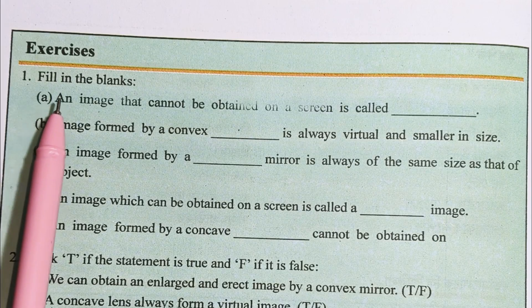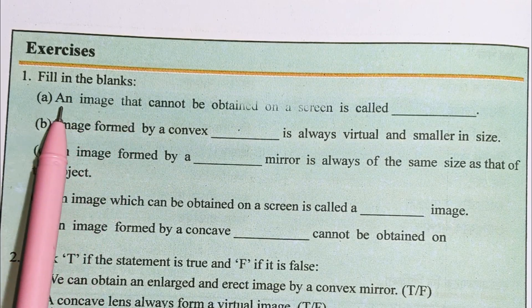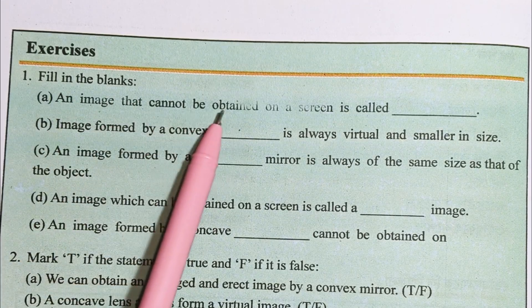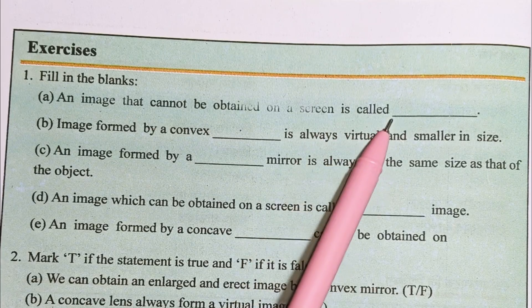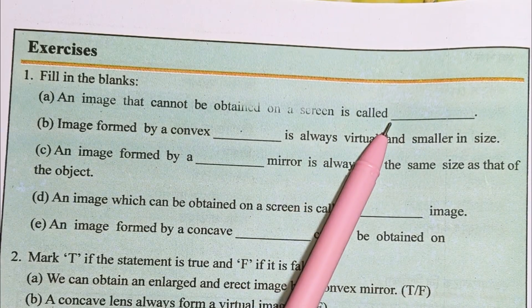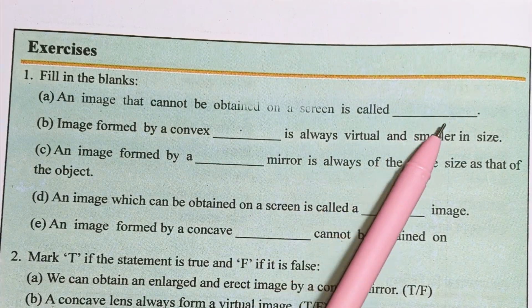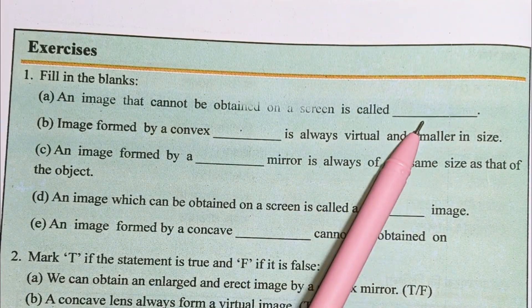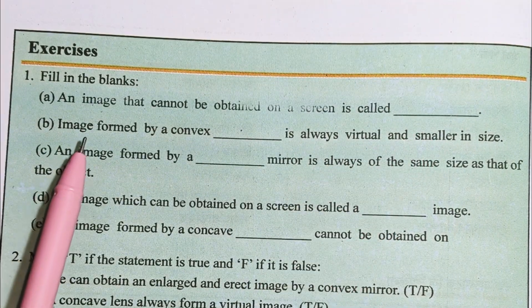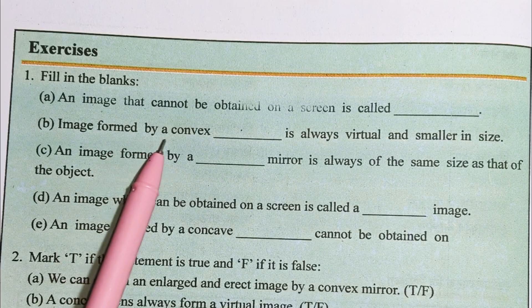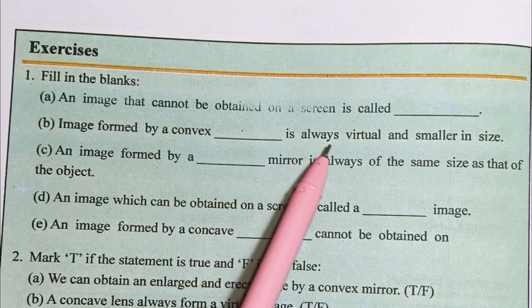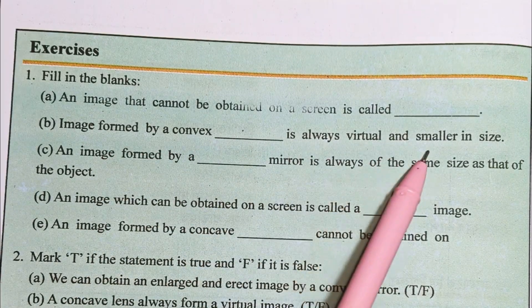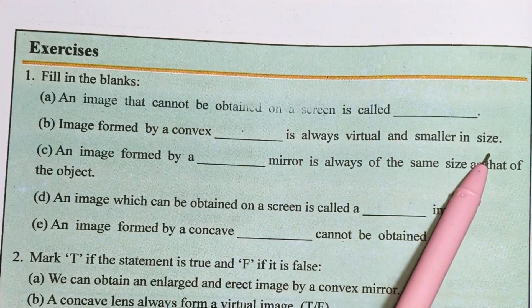Question number 1. Fill in the blanks. Number A: An image that cannot be obtained on a screen is called a virtual image. Number B: Image formed by a convex mirror is always virtual and smaller in size.